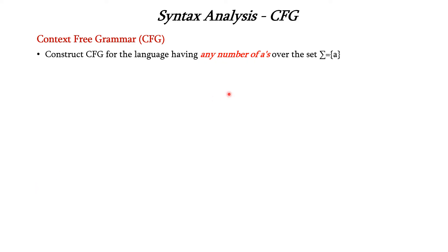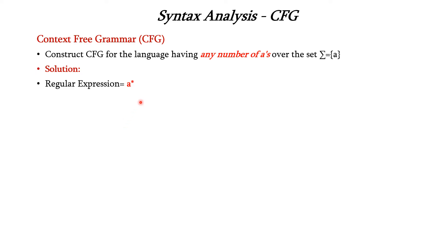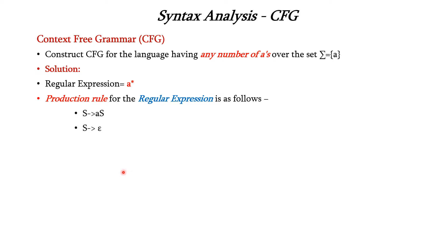Now let us see how to derive a string using production rules in context-free grammar. Consider this question: construct a CFG for the language having any number of A's over the set A. We can represent this in the form of a regular expression. Any number of A's means 0 or more A's, so we represent it as A-closure. The same can be expressed in terms of productions: S → AS and S → epsilon.